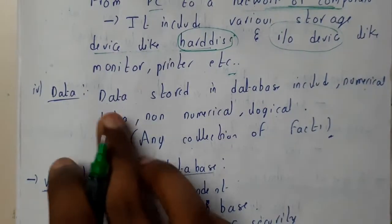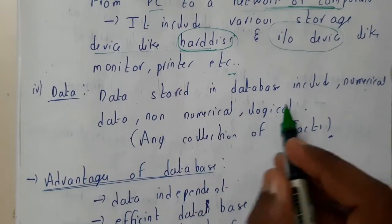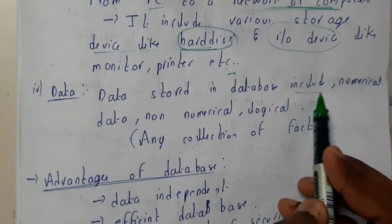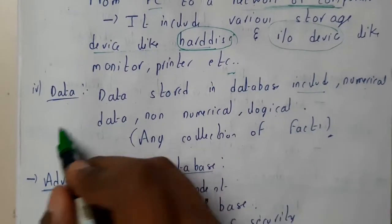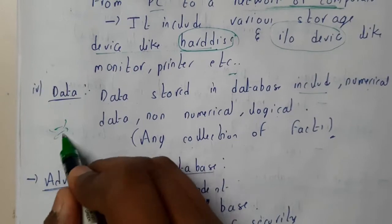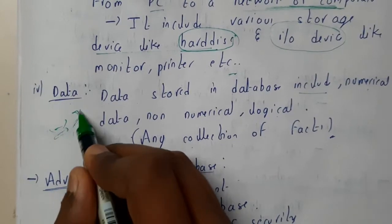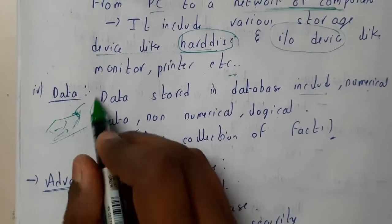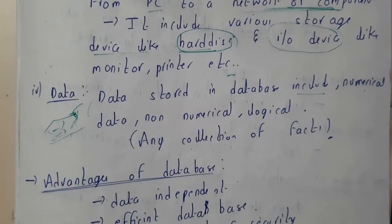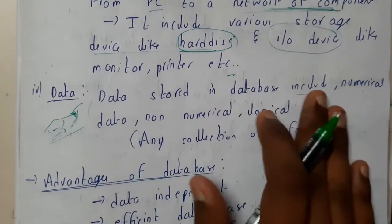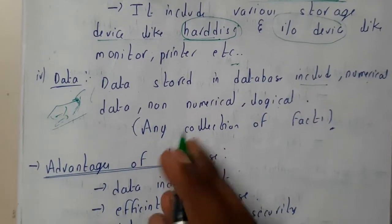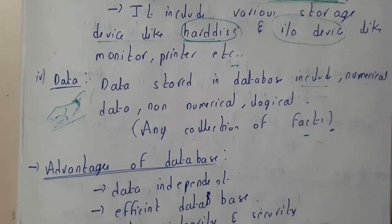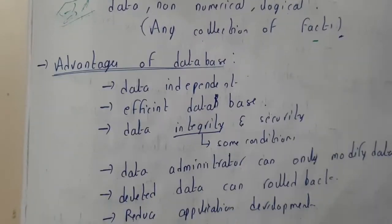In hardware we'll be storing our data. Hardware may include different types of storage — any kind of data is converted into binary basically, but we can store any kind of data. Data is nothing but a collection of facts.